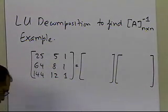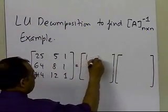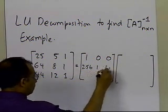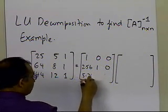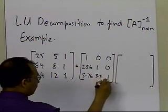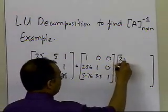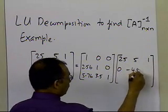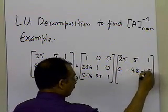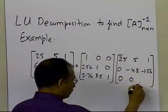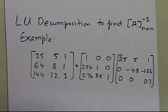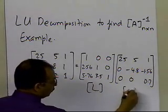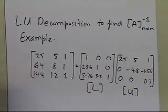The L and U decomposition of this matrix is: L = [1, 0, 0; 2.56, 1, 0; 5.76, 3.5, 1], and U = [25, 5, 1; 0, -4.8, -1.56; 0, 0, 0.7]. That is the L and U decomposition of the A matrix, which we're going to use to find the inverse.